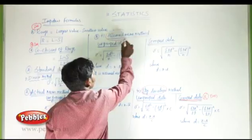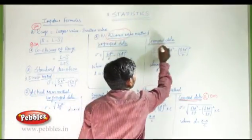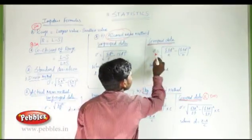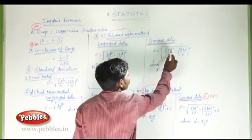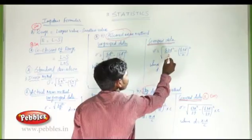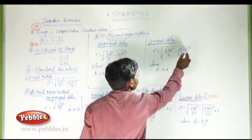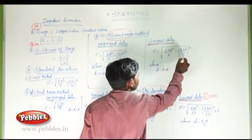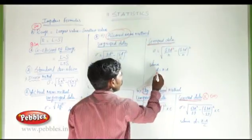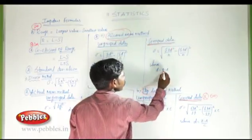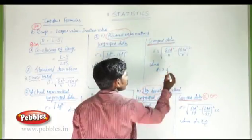The assumed mean method for grouped data: standard deviation = √(σfd² / n − (σfd / n)²), where d = x − a, and a is the assumed mean.